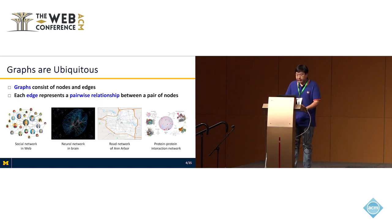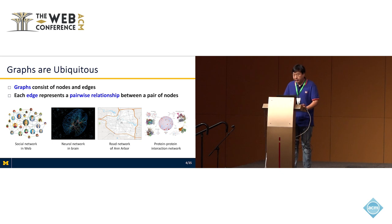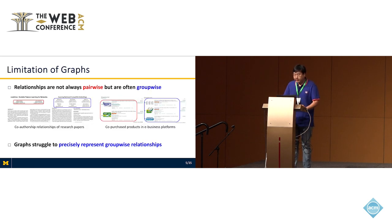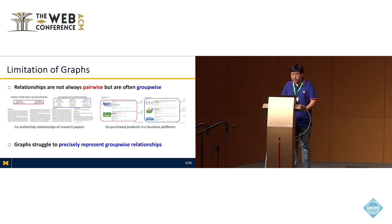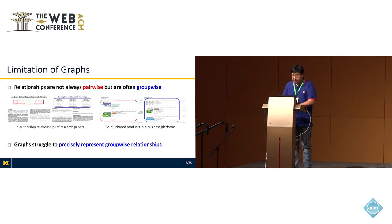This is the background. A graph consists of nodes and edges, and each edge represents a pairwise relationship between a pair of nodes. Graphs appear everywhere, such as in social networks, neural networks, road networks, and protein-protein interaction networks. However, graphs have a limitation: in the real world, there exist many complex group relationships, such as collaboration of researchers and co-purchased products in e-business platforms. Graphs struggle to precisely represent group-wise relationships since they use edges which represent only pairwise relationships.